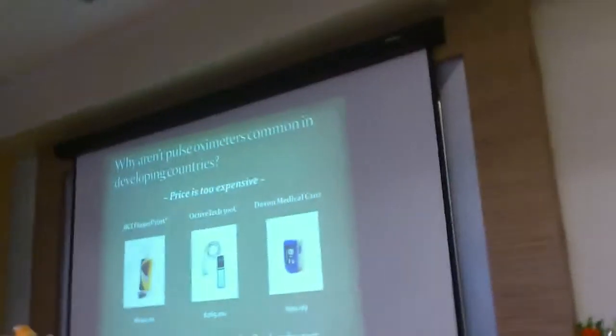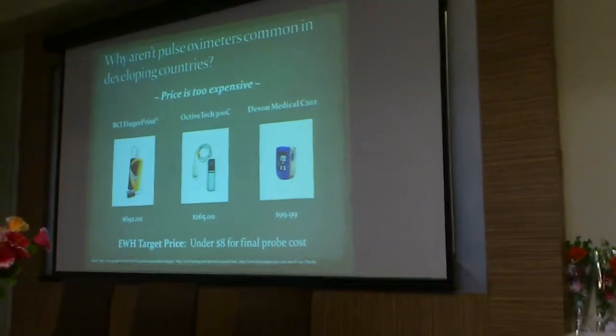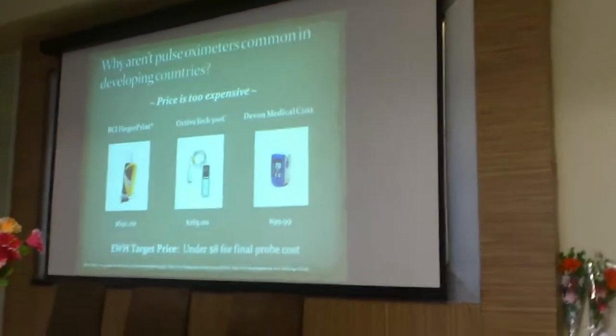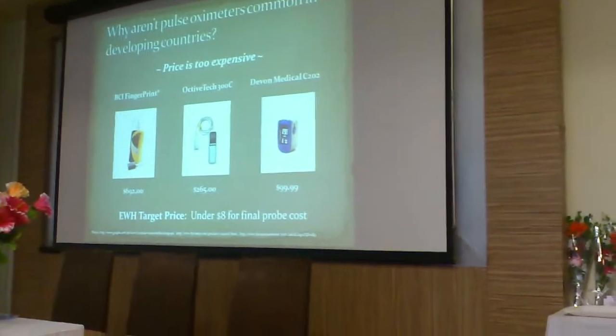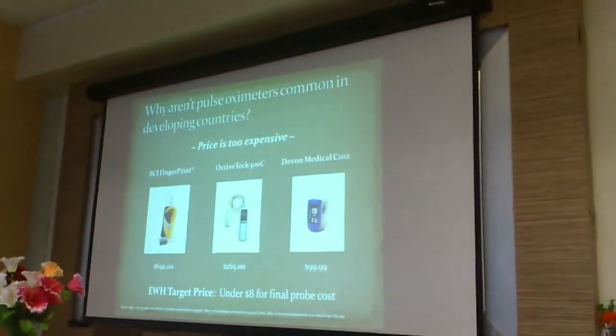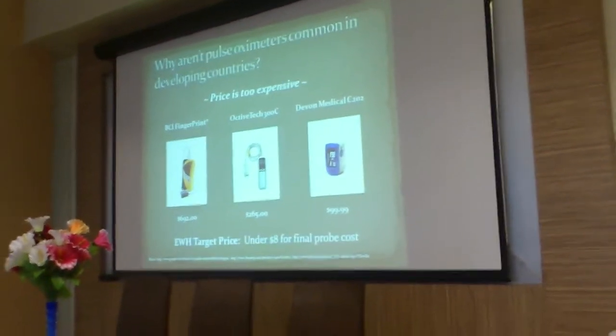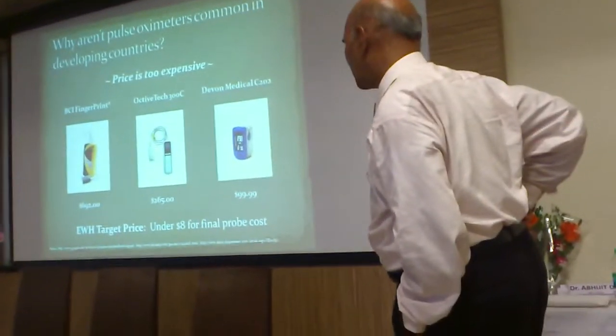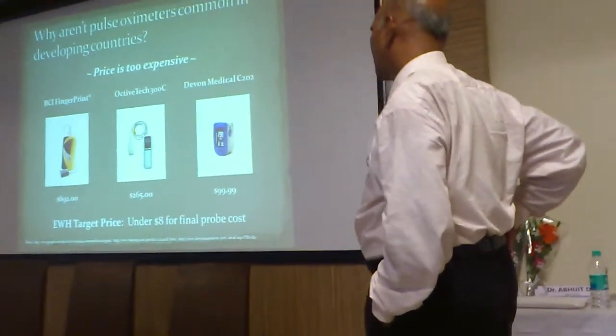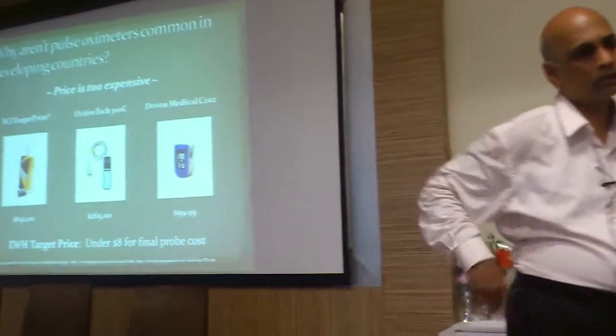These are the typical pulse oximeter models common in developing countries. There is a company called BCI, the BCI fingerprint model, the Octave Tech 300C and the Devon Medical C202. You can see the price ranges — about $670, $265, and as low as $99. It's just a clip which you put on the fingertip and you have two readings: one is oxygen saturation level, which is 98, and you also have the pulse rate at about 75%.